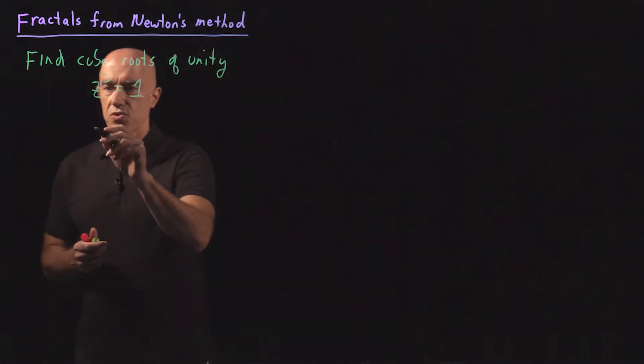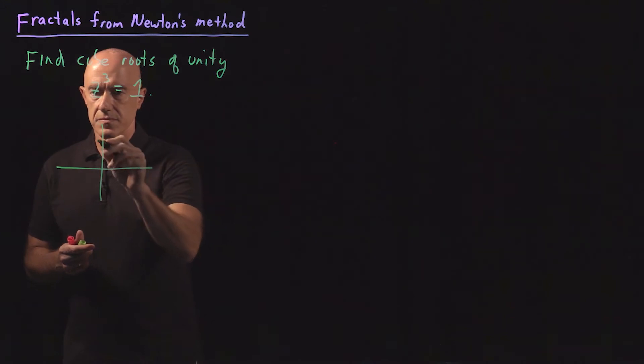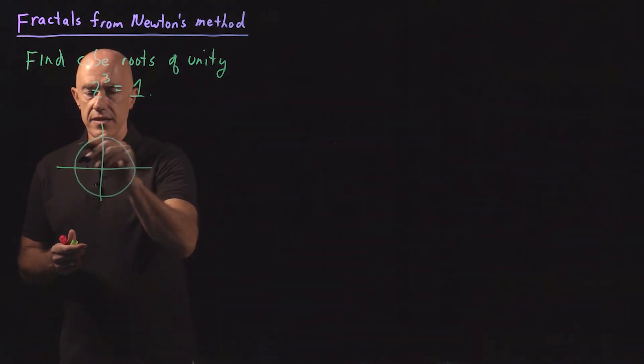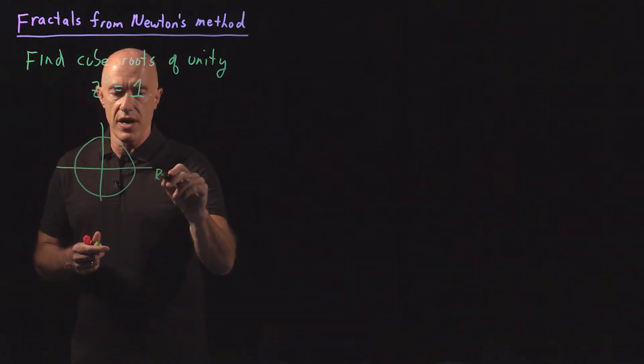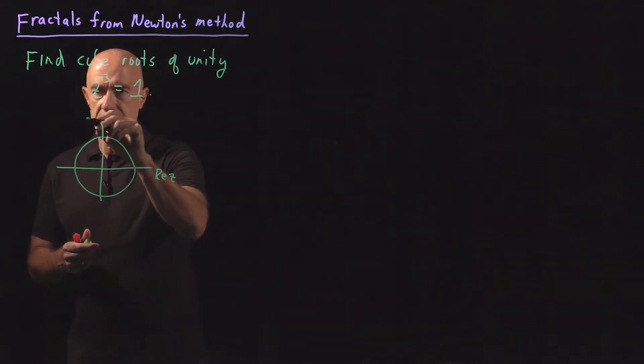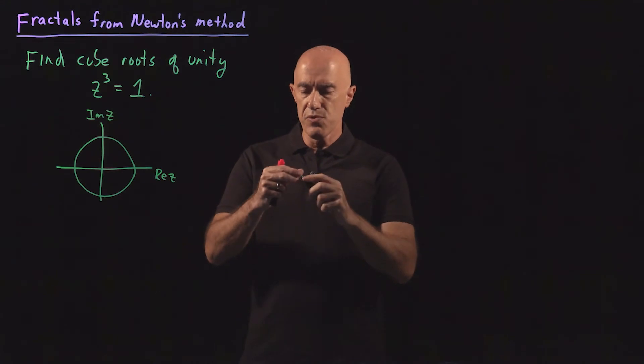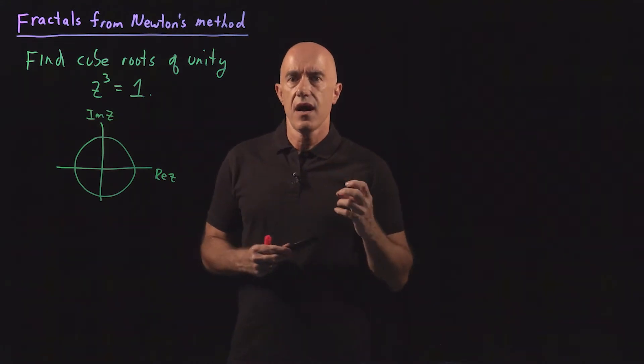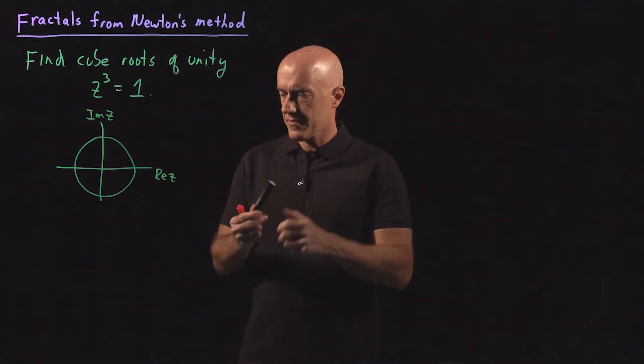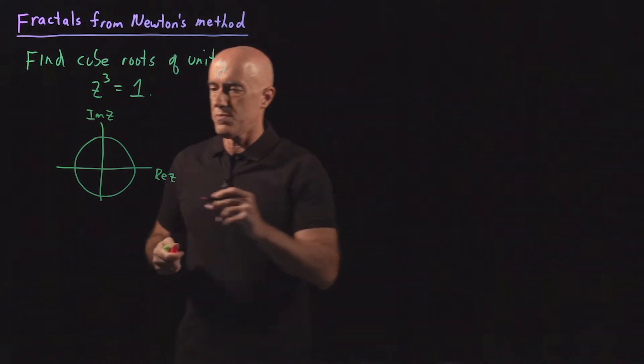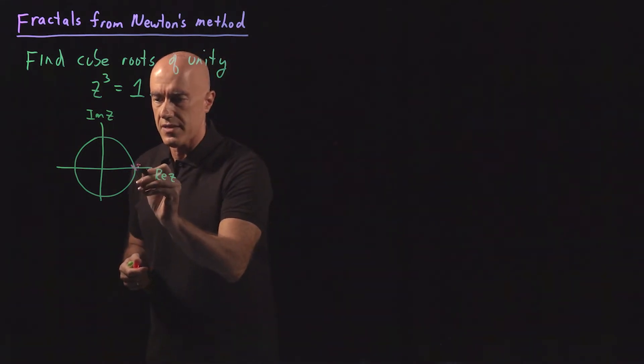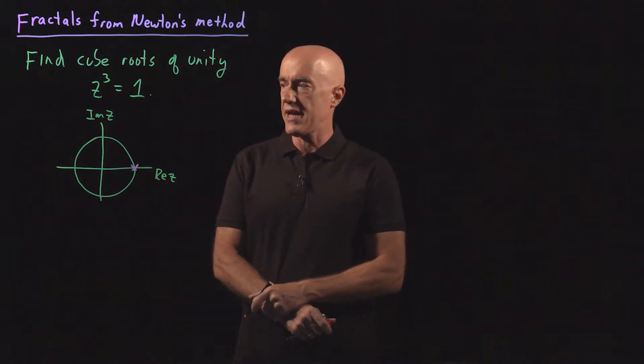If I draw the unit circle in the complex plane, so this is the real part of z, this is the imaginary part of z, then the cube roots of unity lie on the unit circle, and one of them is 1. 1 cubed equals 1, so 1 lies here on the real axis.